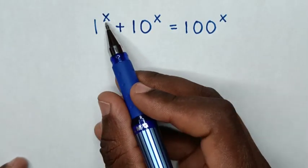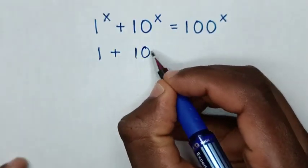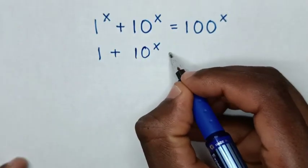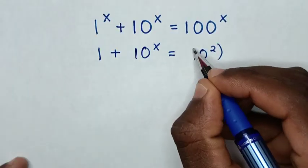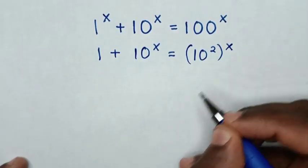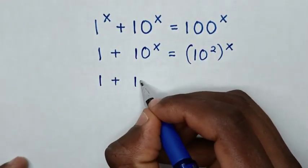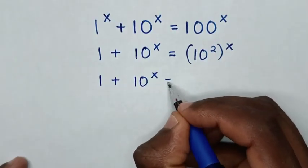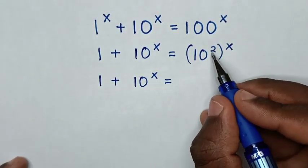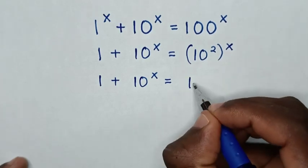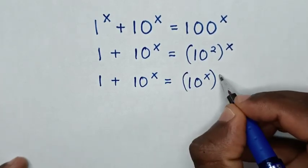Since 1 to the power of any number is 1, we have 1 plus 10^x equals 100^x, which is the same as (10²)^x. Then in the next step, it becomes 1 plus 10^x equals 10^x with the x inside the bracket and the power of 2 outside — so (10^x)².